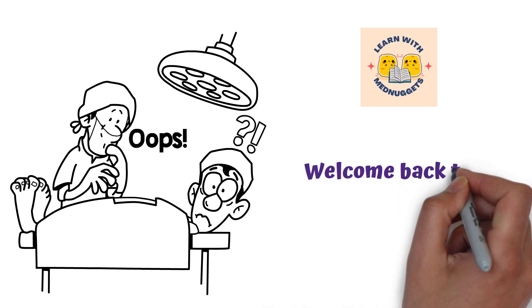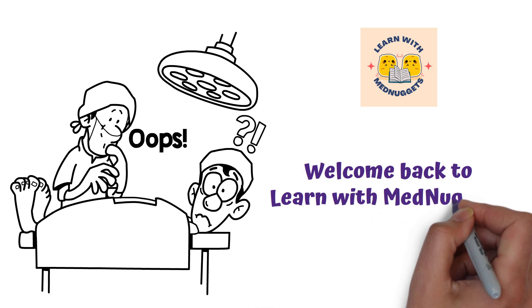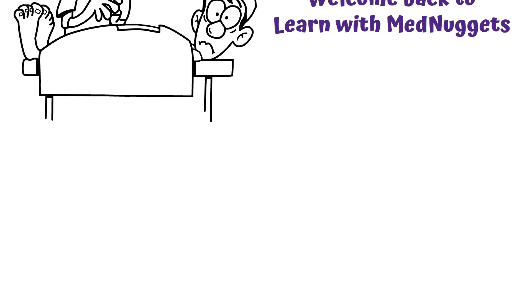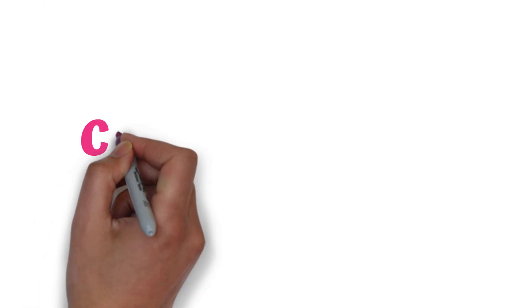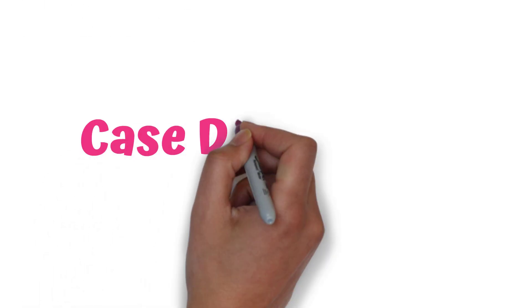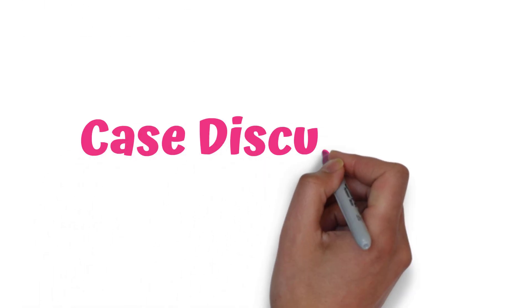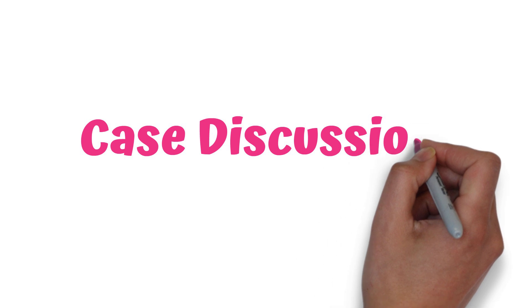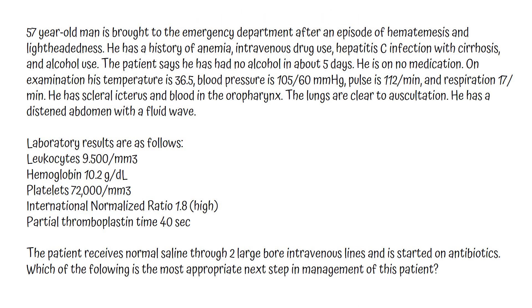Hi guys, welcome back to Learn with Med Nuggets. In this video we are going to discuss a case on upper GI bleeding. Let's dive into the case. A 57-year-old man is brought to the emergency department after an episode of hematemesis and lightheadedness.